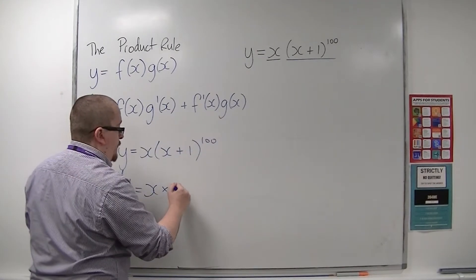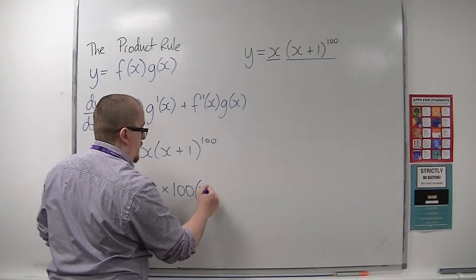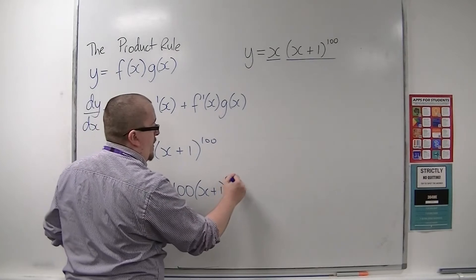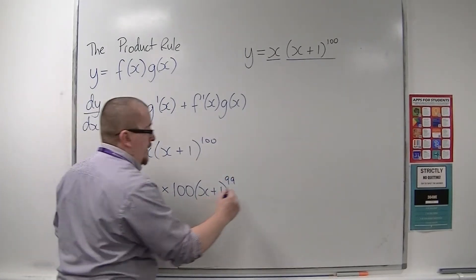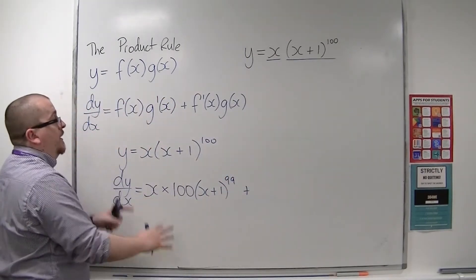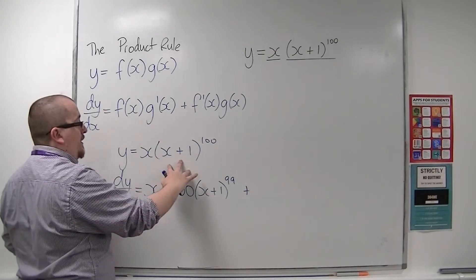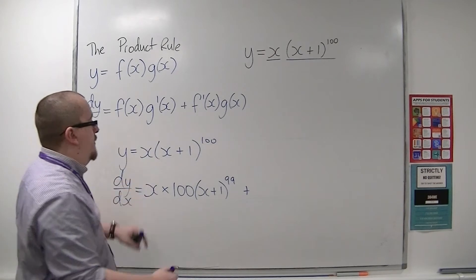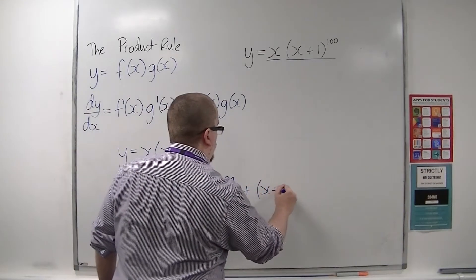So the 100 comes down to the front. The derivative of what's inside comes outside, which is just 1, and then take 1 off the power. Plus, so that's the derivative of the second, plus the second times the derivative of the first. Now the derivative of the first is just 1. So this will be x plus 1 to the 100 times 1.